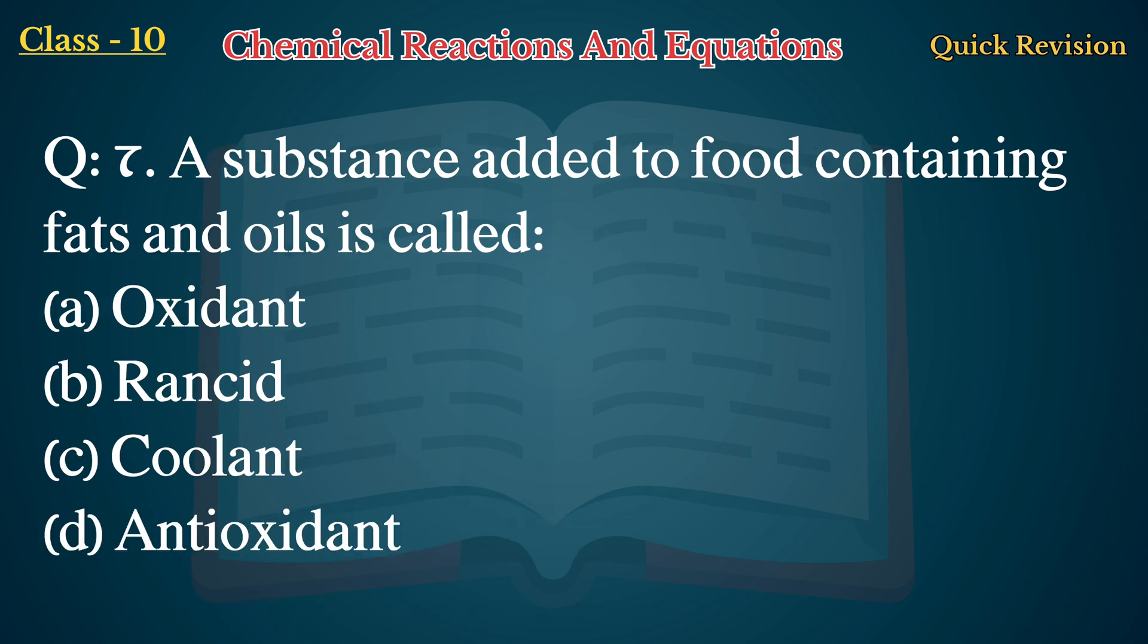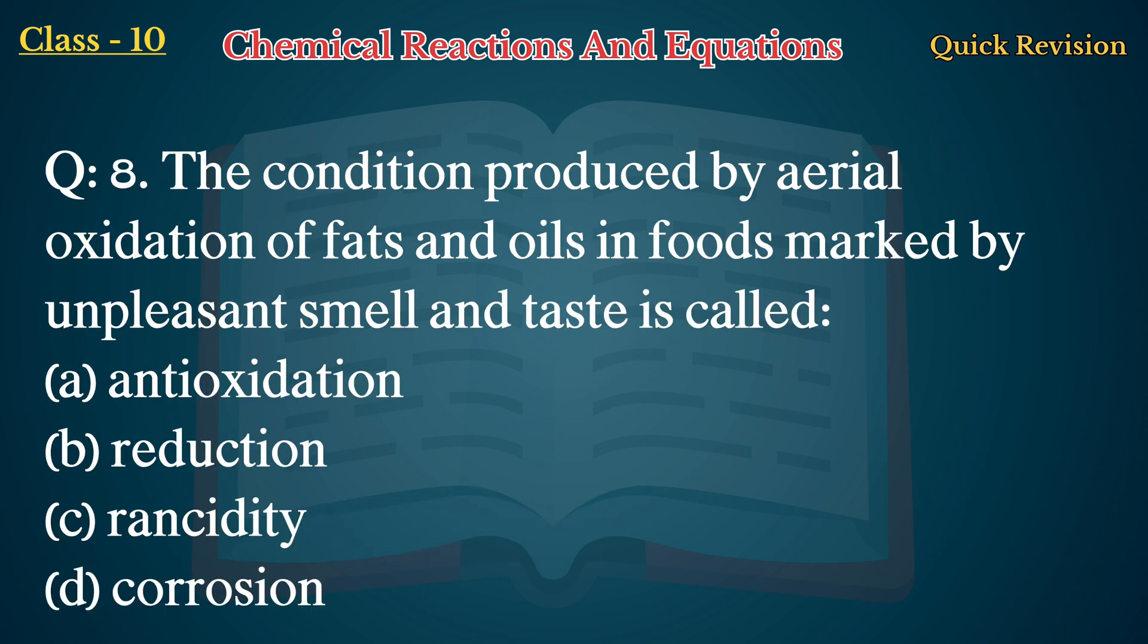Question No. 7: A substance added to food containing fats and oils is called: A. Oxidant, B. Rancid, C. Coolant, D. Antioxidant.